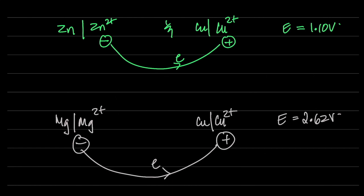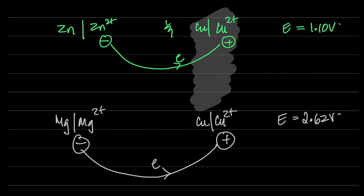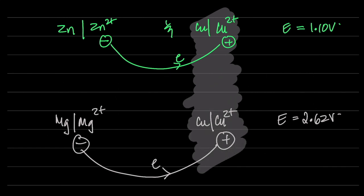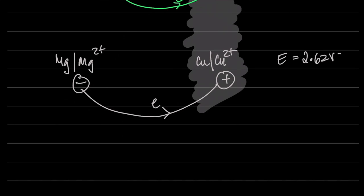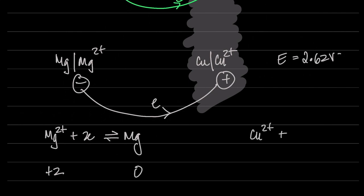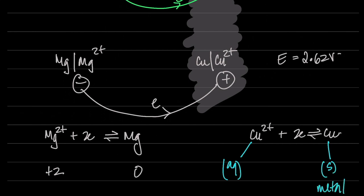But life couldn't be that simple. Somebody decided we shouldn't use copper as the standard — instead we take hydrogen as the standard. Now, so far you've seen half cells that include two oxidation state forms — like magnesium 2+ and zero state, or copper 2+ and zero state — where one state is aqueous ions and the other is solid metal. We call these redox half cells.